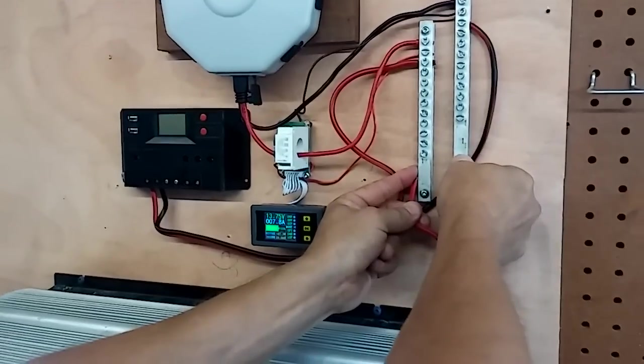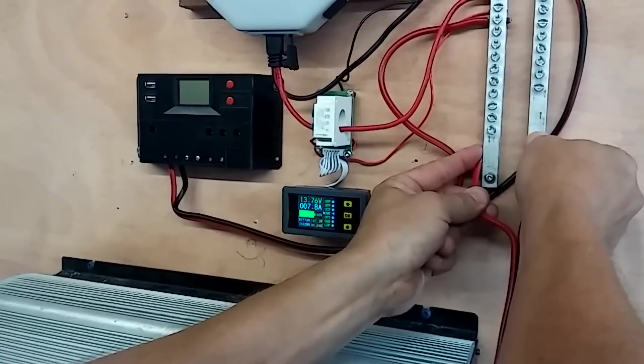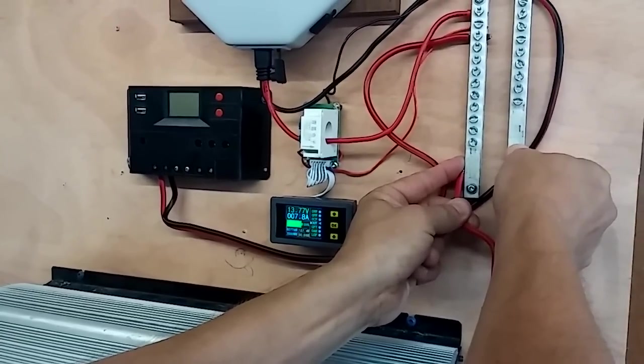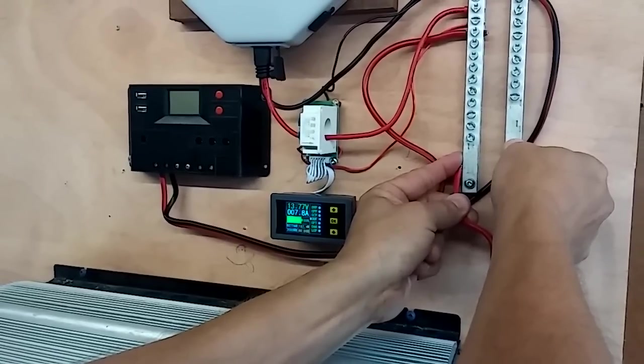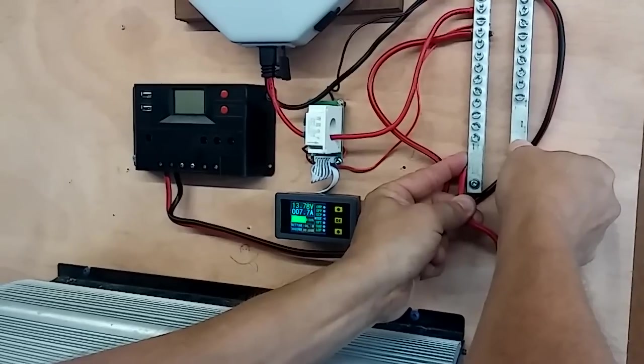Could be my location, could be just a slight angle of the panels, but I believe I have a typical setup. I'm pointed directly at the sun right now and this is just a dead short right across the solar panels going to the battery, so that is max.